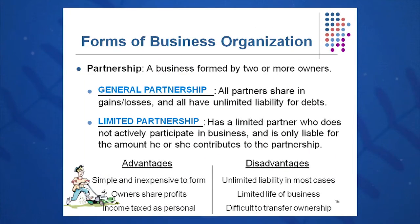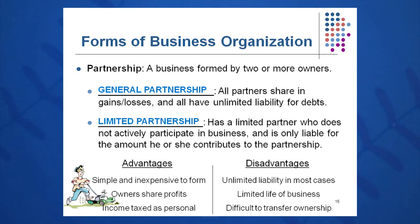In terms of a partnership, you may gather a partner and start something like a lemonade stand. In a general partnership, all partners share in the gains and losses equally, and all income is taxed as personal income. General partners have unlimited liability on the debts, while limited partners have liability limited to the amount they've contributed. Advantages include being simple to form and sharing profits with personal income taxation. Disadvantages include unlimited liability for general partners, limited life of the business, and difficulty transferring ownership.